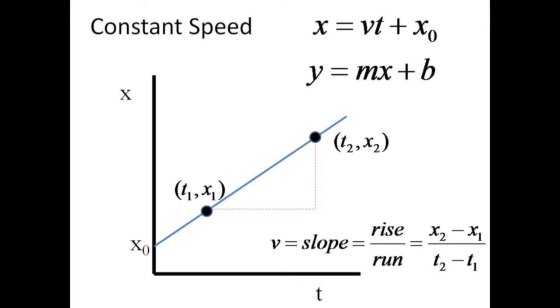Two points are enough to uniquely determine the slope and intercept. The velocity of this graph is the slope and is found from the rise over the run, or the difference in x values divided by the difference in the corresponding time values.